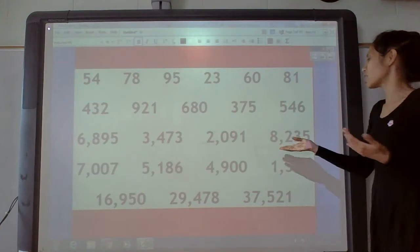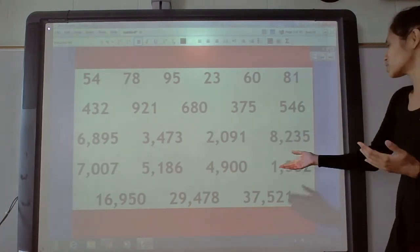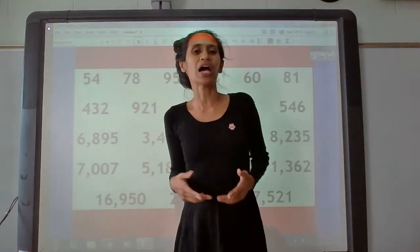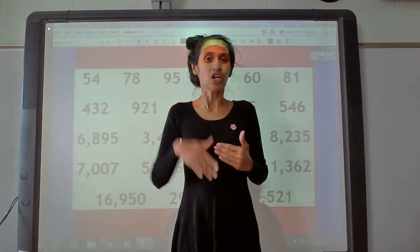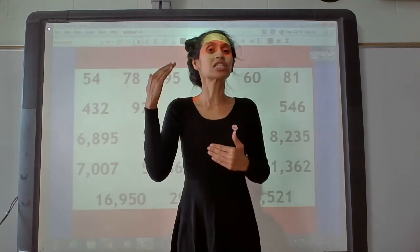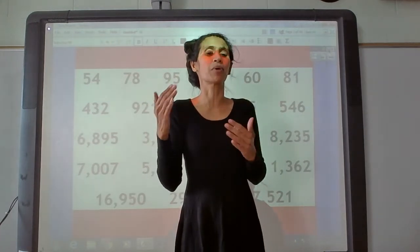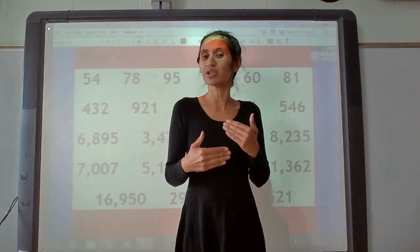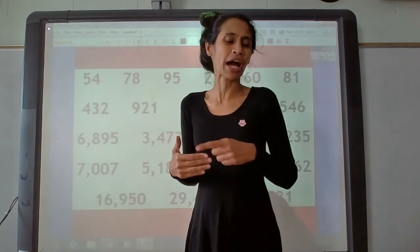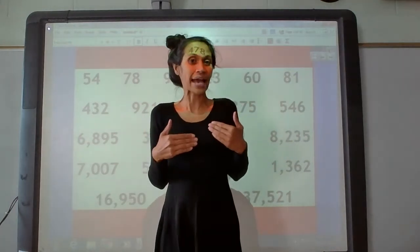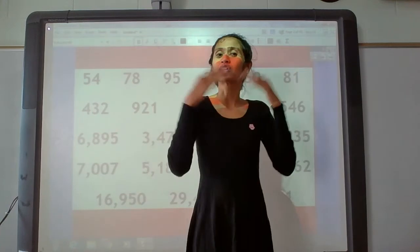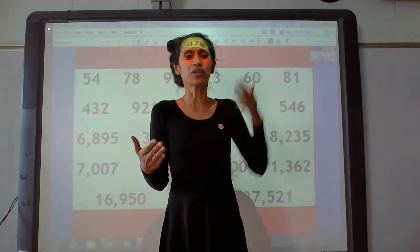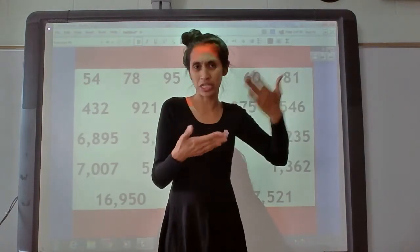Or you can write 8,235 minus 1,362 and subtract that out. Another important rule: when you're subtracting, what number always goes on top? Not the smaller number — the larger number. Make sure you write the larger number on top, because otherwise you can't subtract properly. That's something you learn in middle school involving negative numbers. So remember: the larger number goes on top, the smaller number at the bottom. You can have one number with four digits and the other with three digits — that's fine.